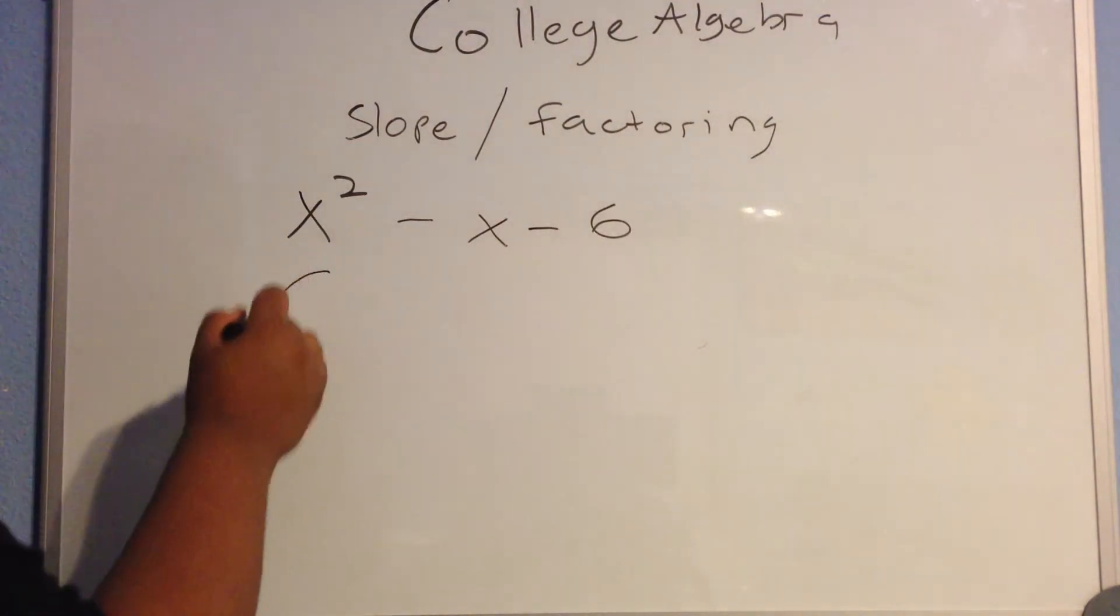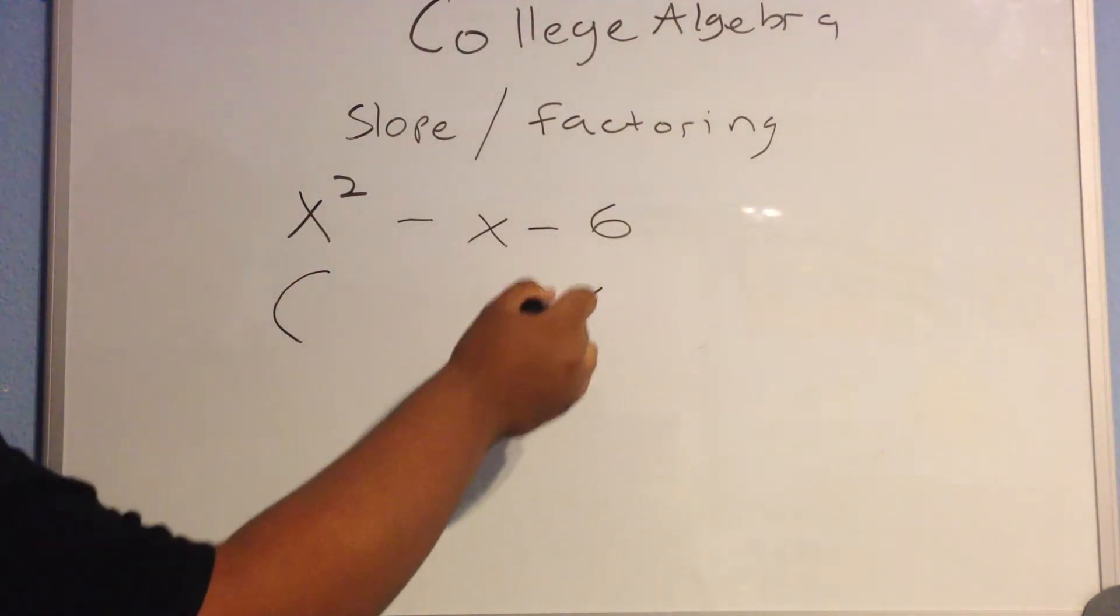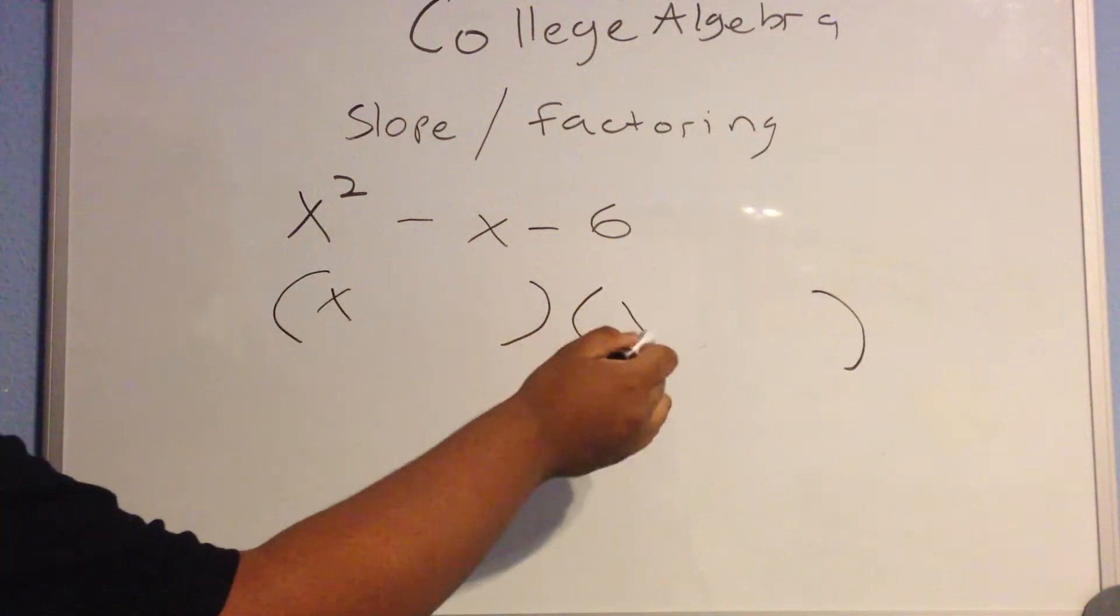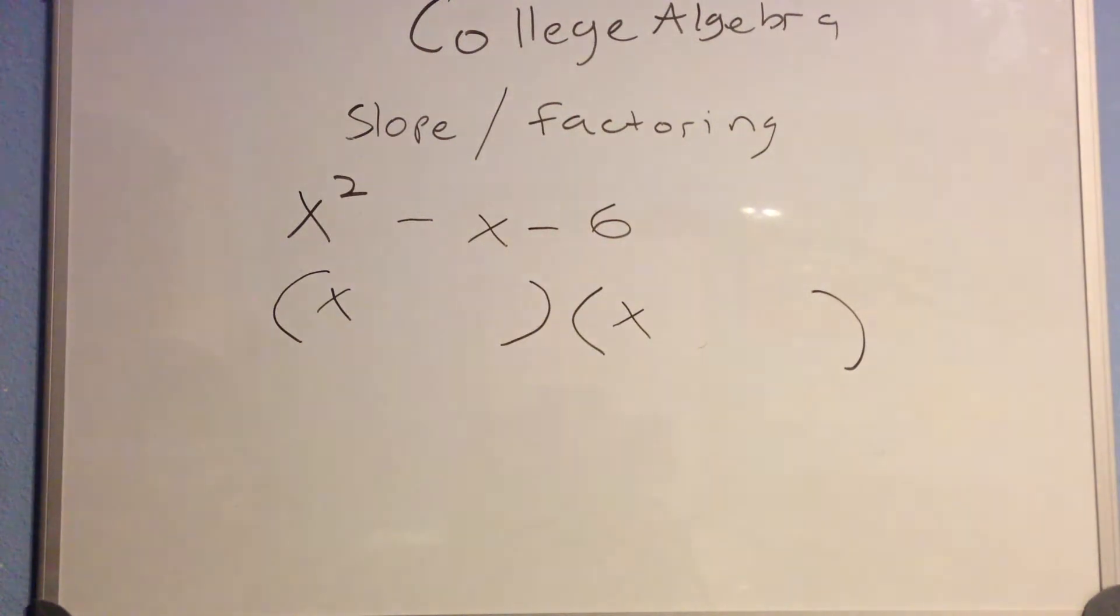First, you have to get two main units of the equation. Since this is x squared, it's going to be x, x. Also, before we continue on, it's important to note that the FOIL method here, basically you're doing the opposite of the FOIL method.